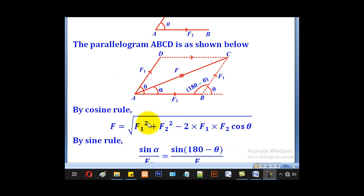So it will be equal to the square root of F1 squared plus F2 squared minus 2 times F1 times F2 cos theta. Now this cos should be 180 minus theta because the angle is 180 minus theta. This is the one we are interested in.